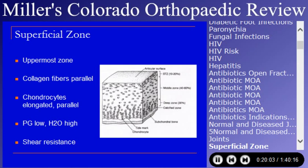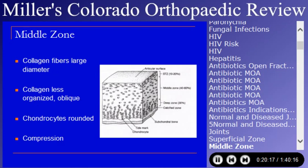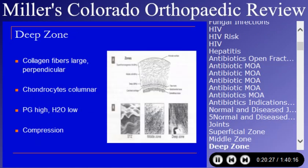In the middle zone, chondrocytes are rounded and proteoglycan levels increase — this primarily serves as resistance to compression. The deep zone has large collagen fibers oriented perpendicular to the joint surface. The chondrocytes are columnar, this is the highest level of proteoglycans, water levels are low, and it functions primarily in a compression mode.